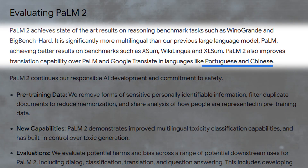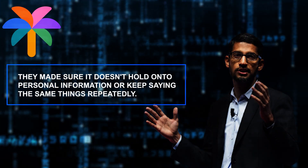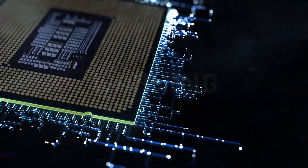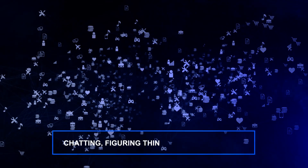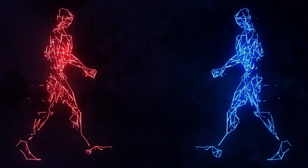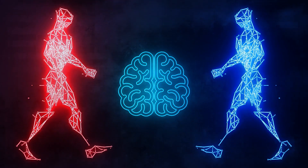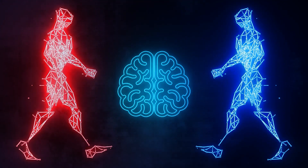It also masters translation, especially in Portuguese and Chinese, outperforming both POM and Google Translate. To ensure its reliability, the creators of POM2 made sure it doesn't hold onto personal information or keep saying the same things repeatedly. They also taught it to spot rude language in different languages and stop it from generating anything inappropriate. They dug deep to see if it was using mean words or showing unfair opinions about different groups of people, and researchers came up with new tests to check for bias when chatting or answering questions.